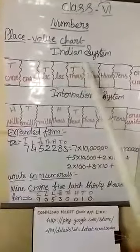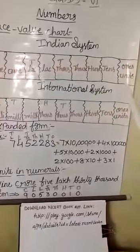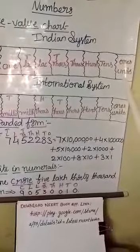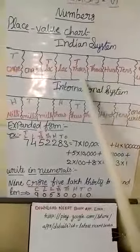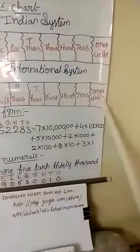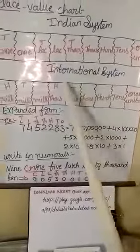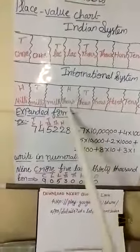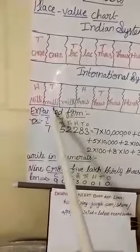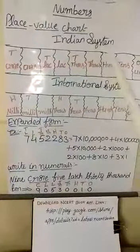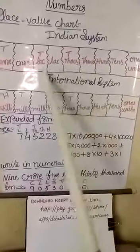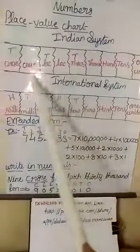In the Indian system, the place value starts from 1s, also known as units. In the Indian system, after the ones period, the pairs start from 2-2, meaning two digits — after every two digits, the period changes.